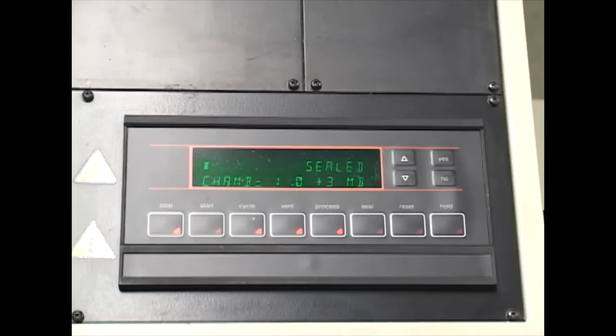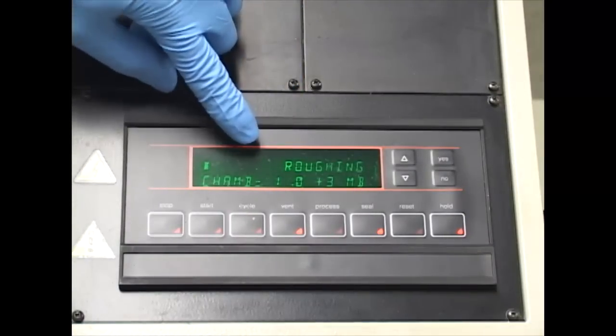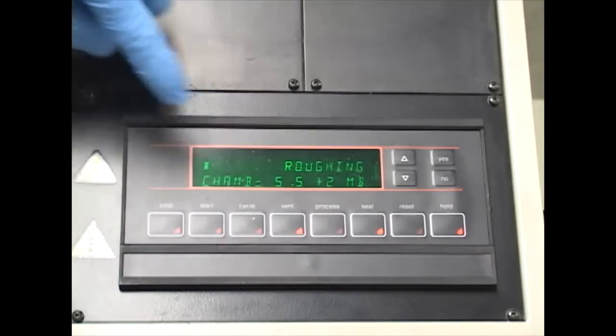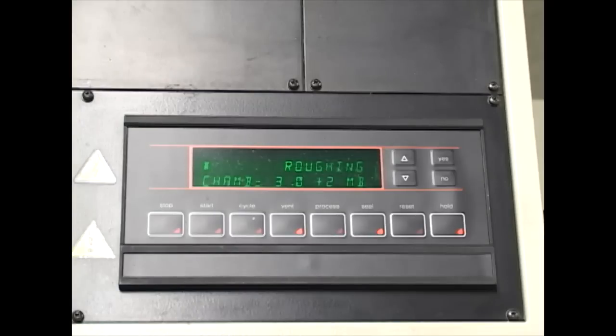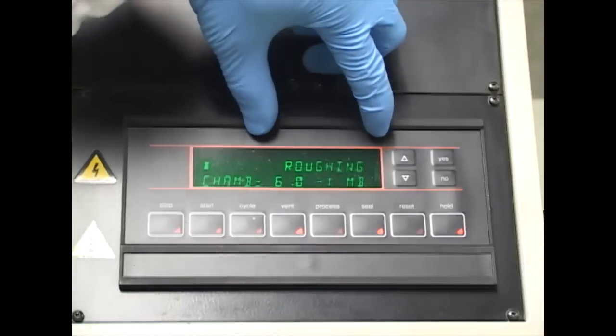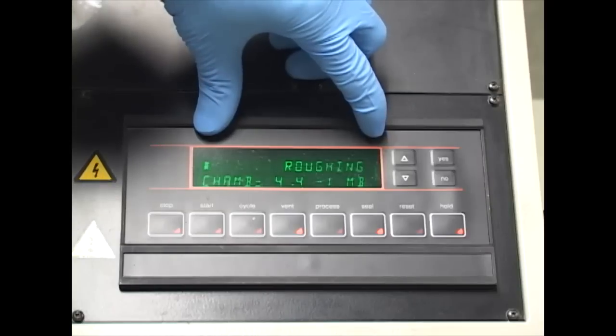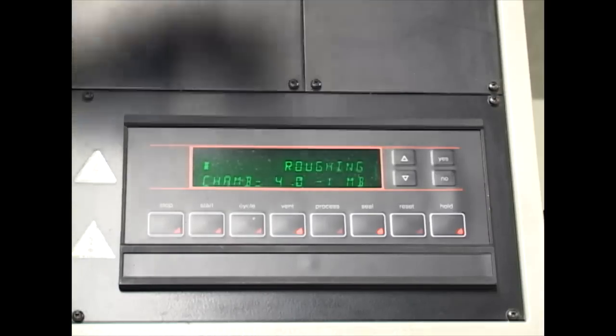To start, what we do is click cycle. We observe the roughing pump is being turned on, and then we can observe the vacuum is running. After a certain pressure, the roughing pump will turn off and the fine pump will turn on, allowing us to have a better vacuum inside the chamber.